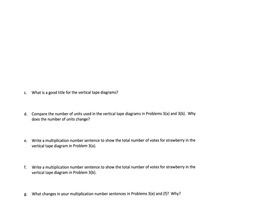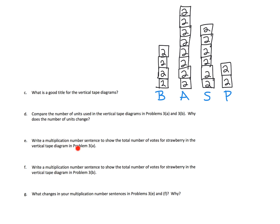You know, what is a good title? Oh, favorite fruit. Compare the number of units used. Well, the number of units got lowered because the unit sizes themselves got bigger. Write a multiplication sentence to show the total number of votes for strawberries in the vertical tape diagram. So if we want to represent the strawberries as a multiplication problem, here's our graph from the previous slide. And you can see that we've got a bunch of twos. One, two, three, four, five, six of them. So what is our sentence going to be? Well, it's going to be six times two, as in six groups of two. Or we could say two times six. And in both cases, the answer is 12.